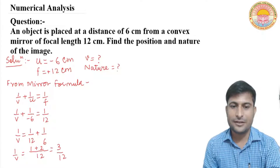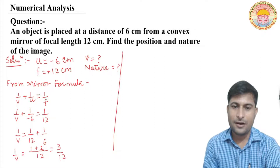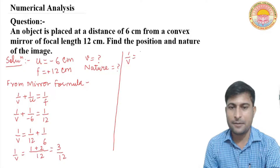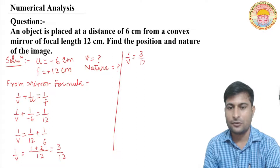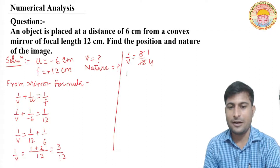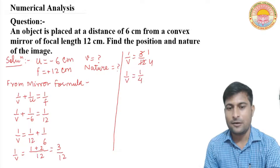So 1 upon v equals — taking LCM of 12 and 6 which is 12 — we get 3 upon 12. Simplifying, 1 upon v equals 1 upon 4, therefore v equals 4 cm.